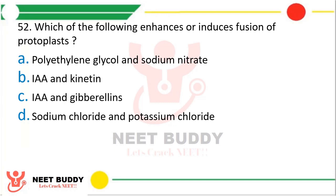Question number 52: Which of the following enhances or induces fusion of protoplasts? Option A: Polyethylene glycol and sodium nitrate. Option B: IAA and kinetin. Option C: IAA and gibberellin. Option D: Sodium chloride and potassium chloride. The correct answer is Option A, polyethylene glycol (PEG) and sodium nitrate.